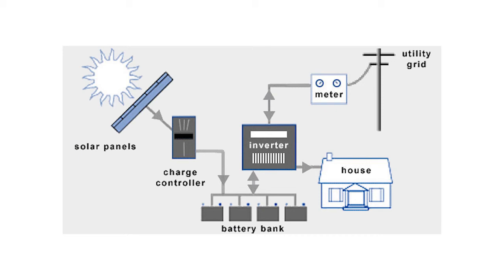The solar charge controller is like the brain of the solar panel. It tells the panel when to charge the battery and when to stop — for example, when the battery is at 100%, just like your phone. So when you're buying your inverter or solar system, remember you need four major components: one, your solar panel; two, your solar charge controller; three, your inverter; and four, your battery. If you have more questions, please comment and I can explain further. Thank you.